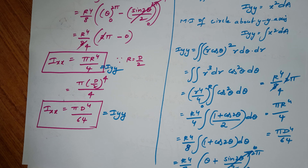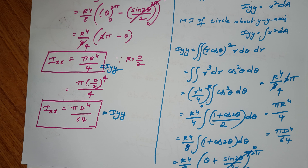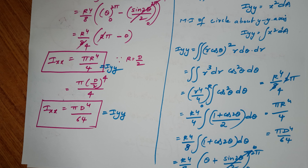So the moment of inertia of a circle about the XX axis and about the YY axis are both the same value. In terms of radius: πR⁴/4. In terms of diameter: πD⁴/64. Both centroidal axes give the same result.